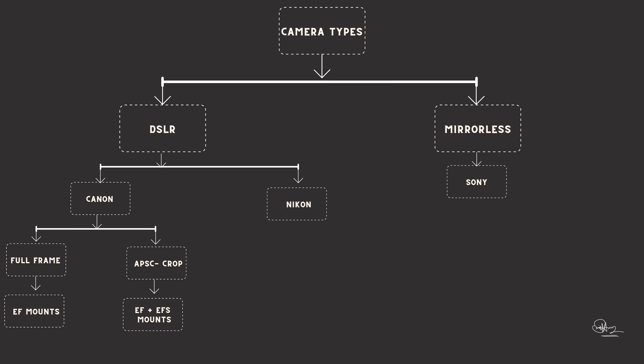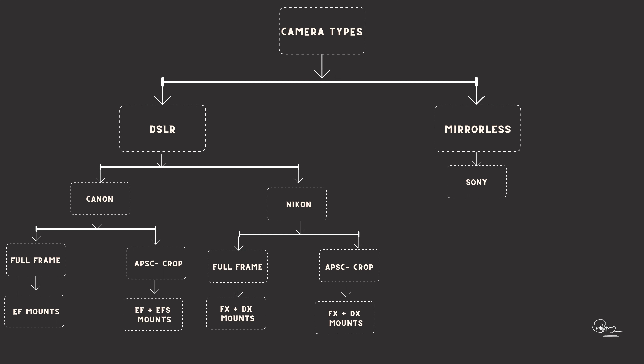Just like Canon, Nikon also has a full frame camera body and an APS-C crop sensor camera body. For the full frame camera body you have to buy the FX lens, and for the crop sensor camera body you have to buy the DX lens. So if you have a full frame Nikon camera you buy FX lenses, and if you have a crop sensor body like the D3000 or D5000 series, you buy DX lenses.